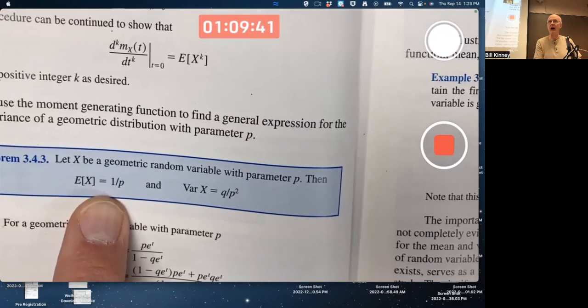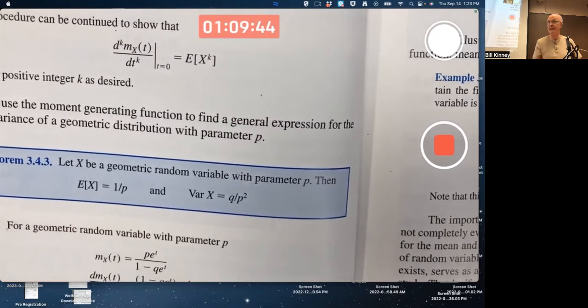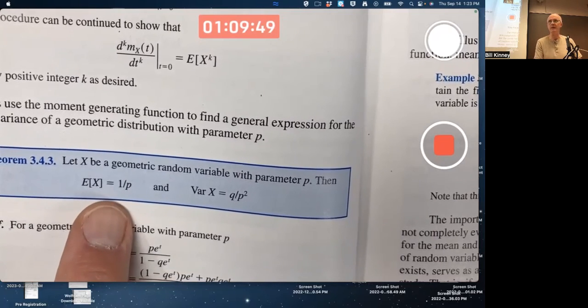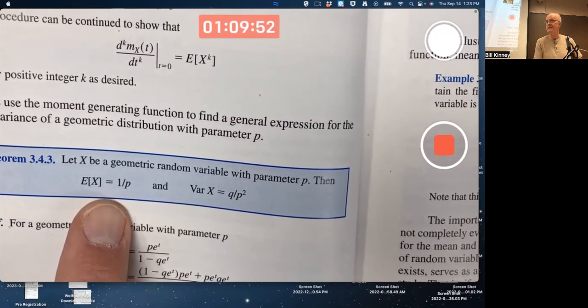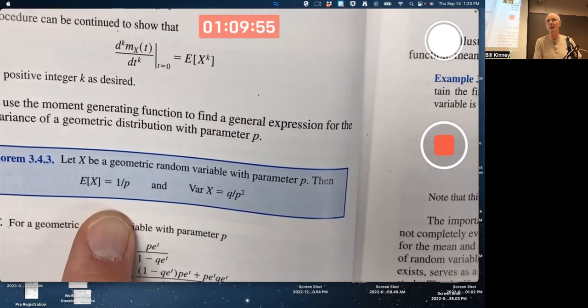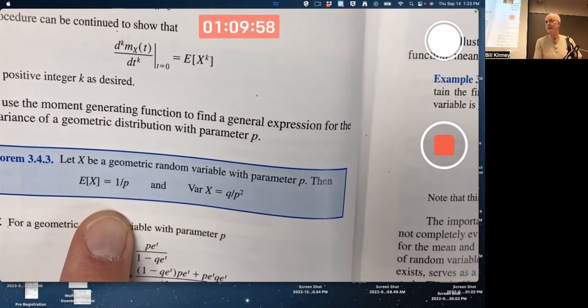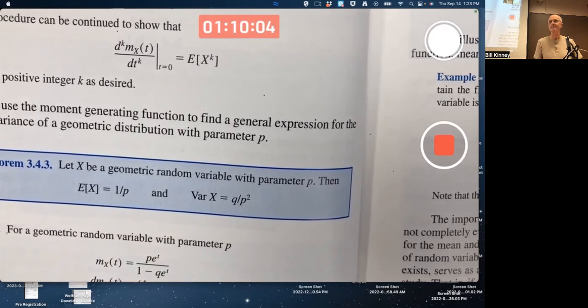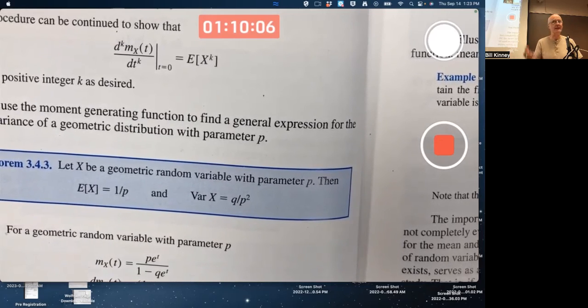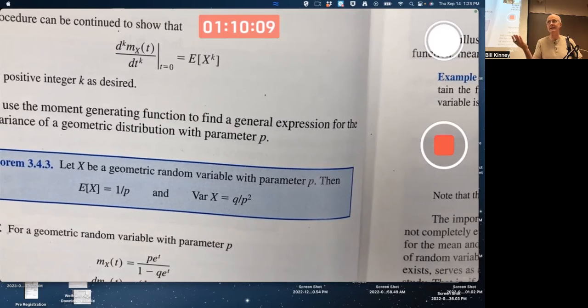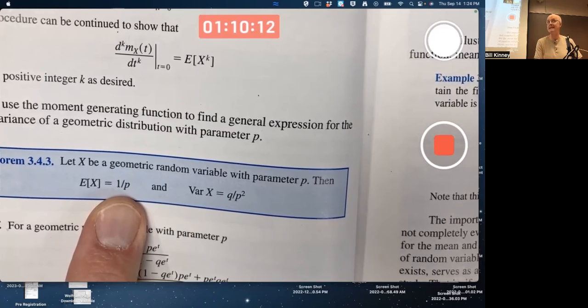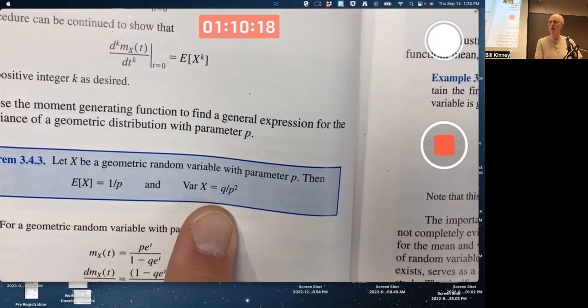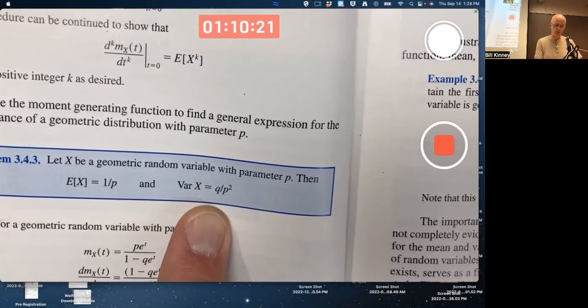If you're flipping a coin, P is 0.5, one over 0.5 is two. On average, it takes two flips to get your first head. If you're a baseball player with a .333 average, P is 0.333, one over that is, well, close to three. On average, it takes three at bats to get your first hit, anytime you start the count of at bats again. Roll a die - what's your probability of getting a six? It's one-sixth. On average, it takes one over one-sixth, six rolls, to get your first six. This makes good intuitive sense. That may be less so, but work with it.